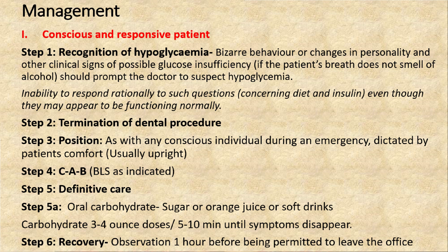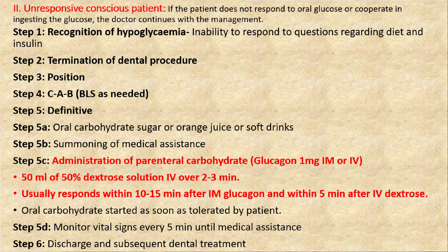Once the patient recovers and symptoms disappear, observe the patient for around one hour before allowing them to leave. If the patient does not recover after oral administration, they fall into the category of conscious but unresponsive patients. Steps 1 through 4 remain the same; in definitive care, administer oral sugar again, and if the patient is still not responding, call for medical assistance and start parenteral carbohydrates — glucagon 1 mg IM or IV.